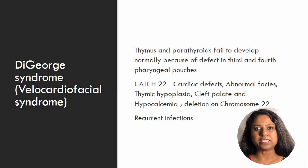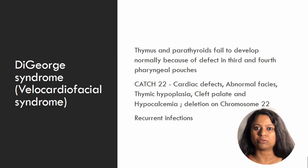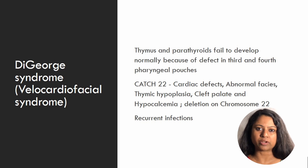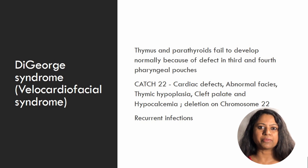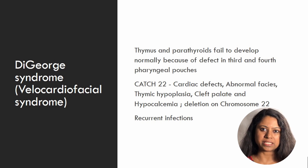DiGeorge syndrome, also called Velocardiofacial syndrome or thymic aplasia, involves a defect in the development of the third and fourth pharyngeal pouches. This affects development of the thymus, which is responsible for maturation of T cells, and the parathyroid glands, leading to hypocalcemia as a leading clinical feature. There is a deletion in chromosome 22. The syndrome can be remembered by the mnemonic CATCH-22, which stands for: Cardiac defects, Abnormal facial features like low-set ears and jaw defects, Thymic aplasia or hypoplasia, Cleft palate, and Hypocalcemia.